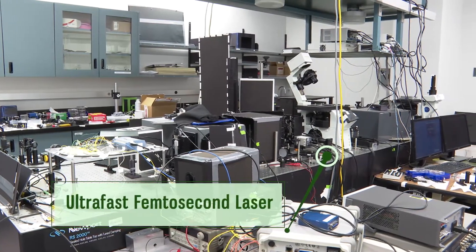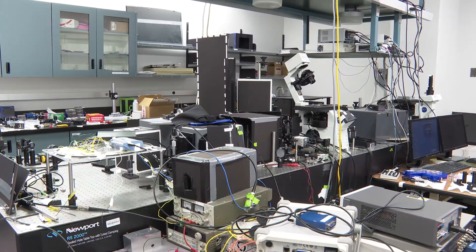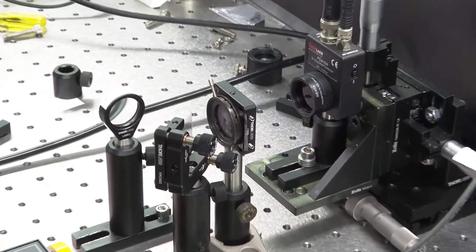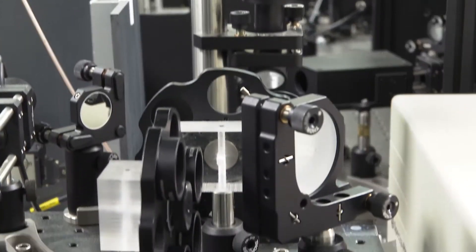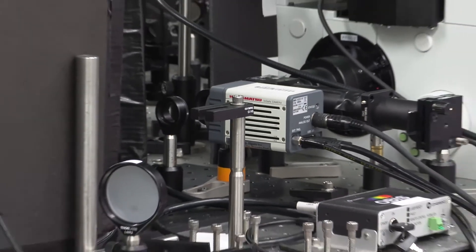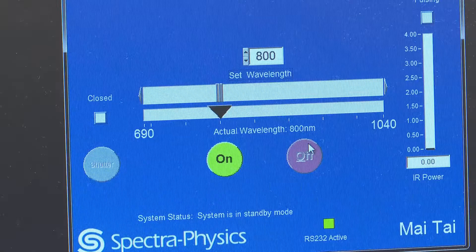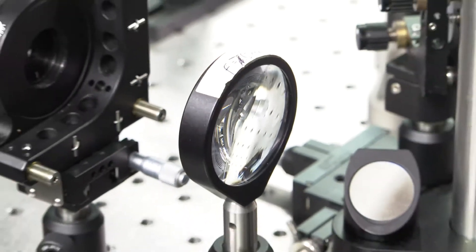The main light source used here is an ultra-fast femtosecond laser at near-infrared. It serves for many nonlinear and linear measurements such as z-scan experiment, second harmonic generation, and lifetime measurement.